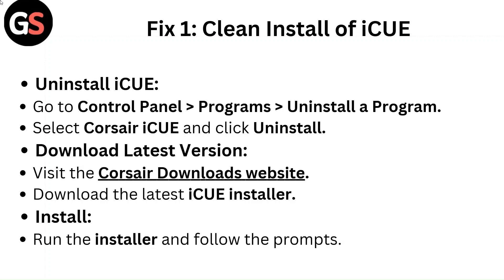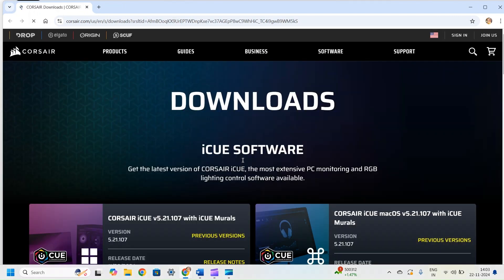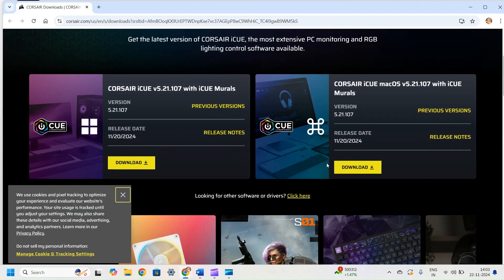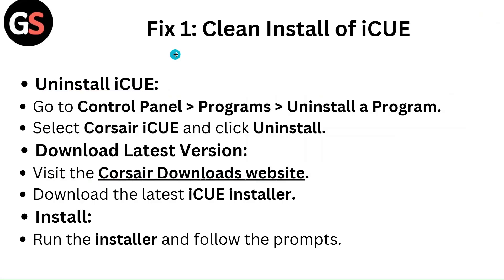Next, download the latest version. Visit the Corsair downloads website, download the latest iCUE installer, then run the installer and follow the prompts.